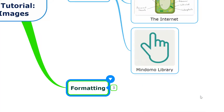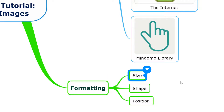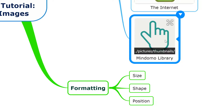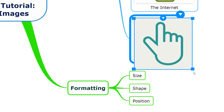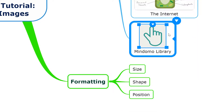Having added some images into your Mindomo maps, you might want to do a little bit of formatting to get them looking the way you want. There are some essential formatting options available within the software. Perhaps the most important is the ability to resize the image. If we take this image that we've added here, click the topic, and then click the image within the topic, you'll see we've now got these control points to resize that image however we want. If an image comes in a bit big, we can easily just resize it and shrink it down to make it a little bit more manageable.